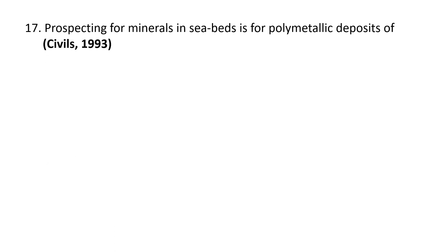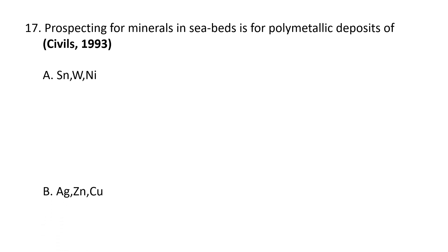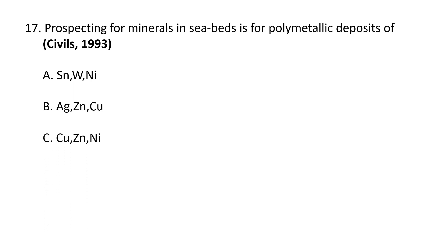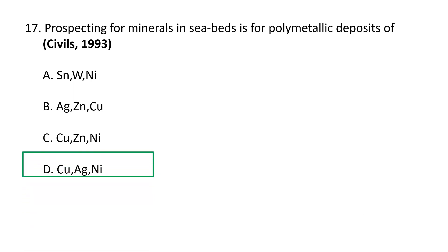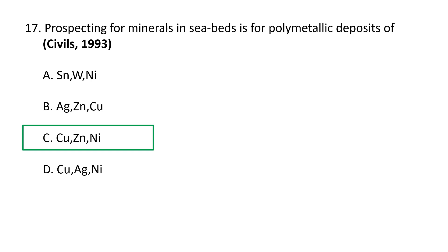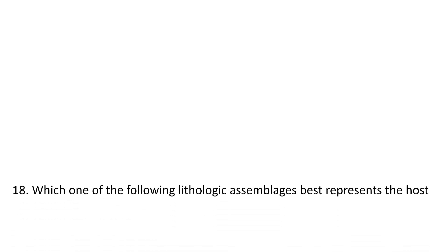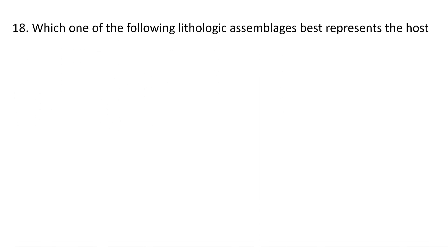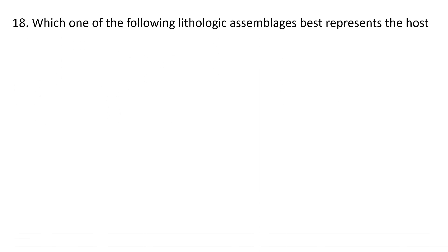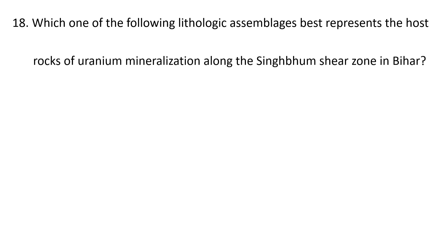Next question: Prospecting for minerals in seabeds is for polymetallic deposits of — this was asked in the Civil Services exam 1993. A. Tin, tungsten, and nickel, B. Silver, zinc, and copper, C. Copper, zinc, and nickel, D. Copper, silver, and nickel. The correct answer is C — copper, zinc, and nickel.